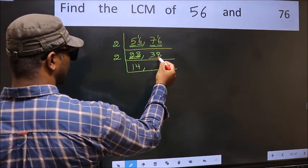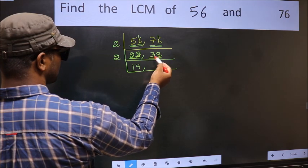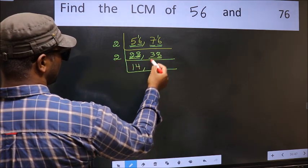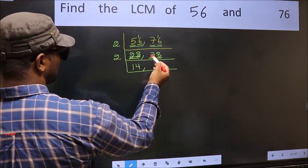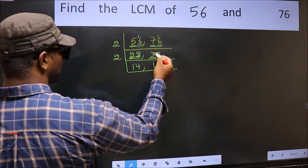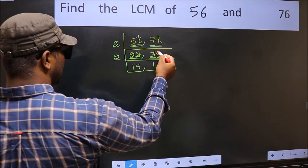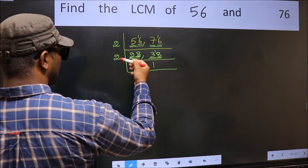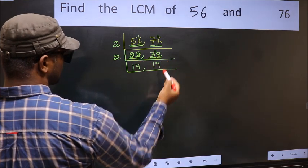Now the other number 38, last digit 8, even, so this is divisible by 2. First number 3, a number close to 3 in 2 table is 2 times 1 is 2. 3 minus 2, 1, 1 carried forward 18. When do we get 18 in 2 table? 2, 9 is 18.